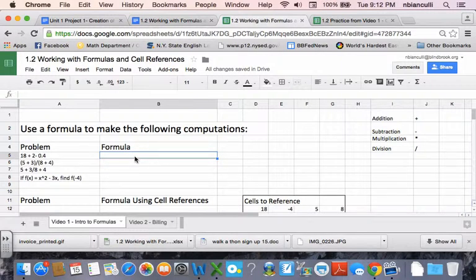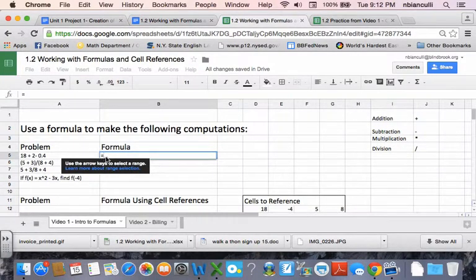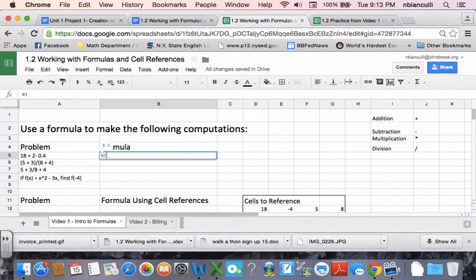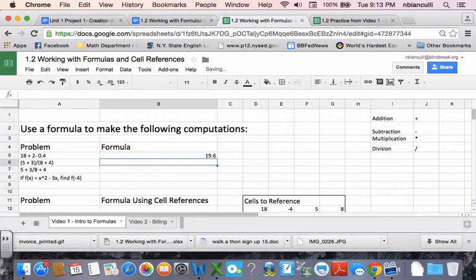So every formula in Excel starts with an equal sign. When you press an equal sign, you'll see it comes up with this little bracket. And now you're typing a formula. So I can type in formulas with numbers. If I want to do 18 plus 2 minus 0.4, I can do 18 plus 2 minus 0.4, press enter, and I'll get the answer, 19.6.